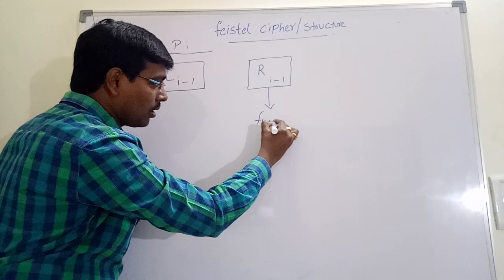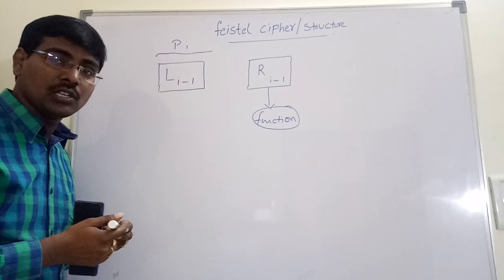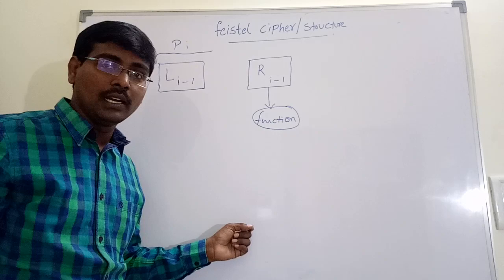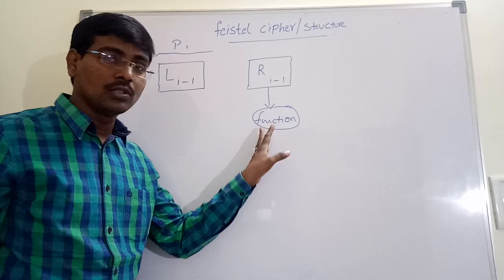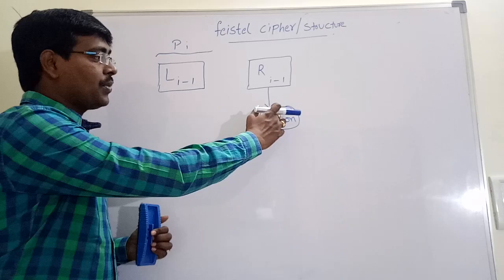Suppose perform some function. Here the function depends on the particular algorithm we are using. For example, if we are using DES algorithm, Data Encryption Standard, we are using one type of algorithm. If we are using IDEA, we are using one type, Blowfish, Cache. So depending on algorithm, the function changes.